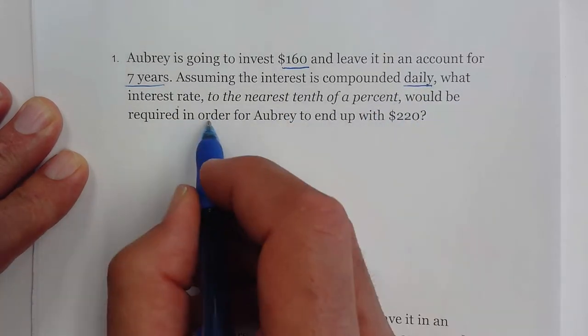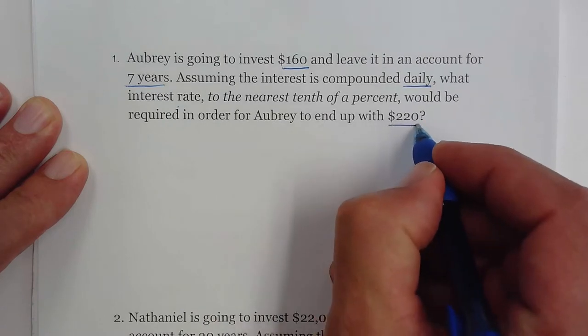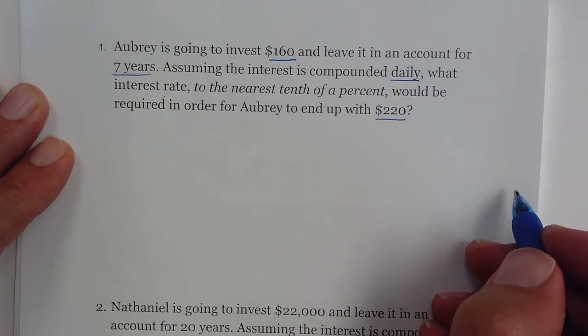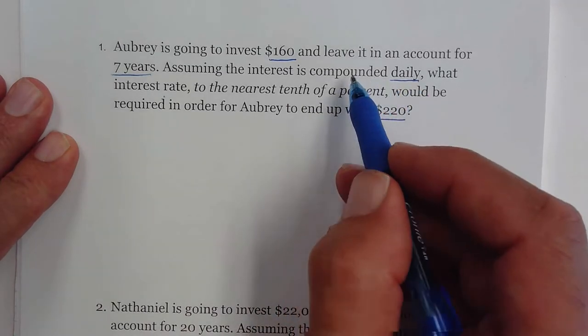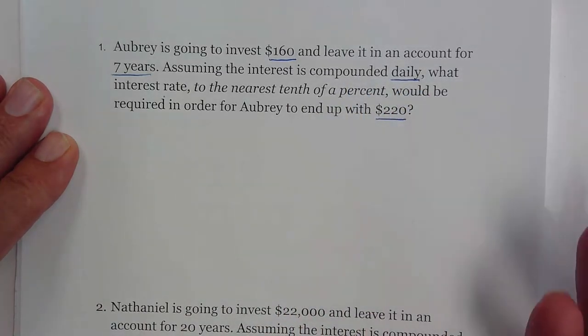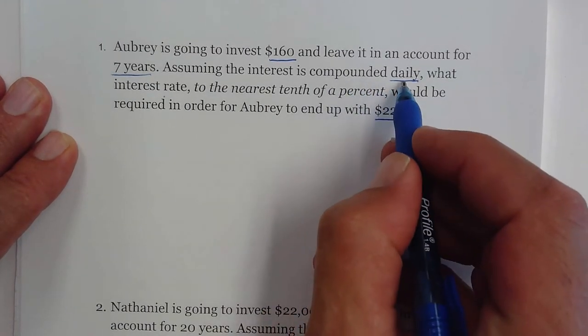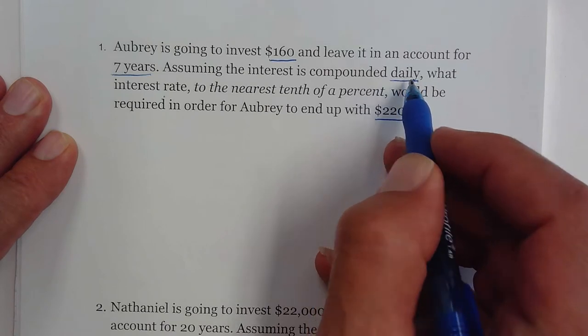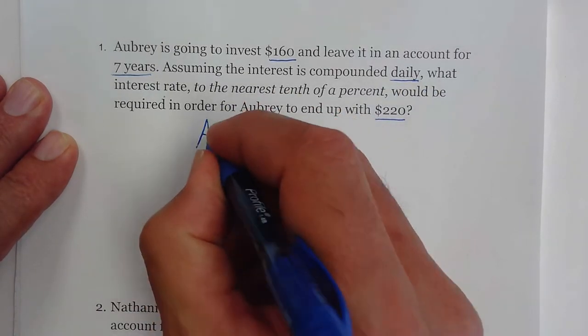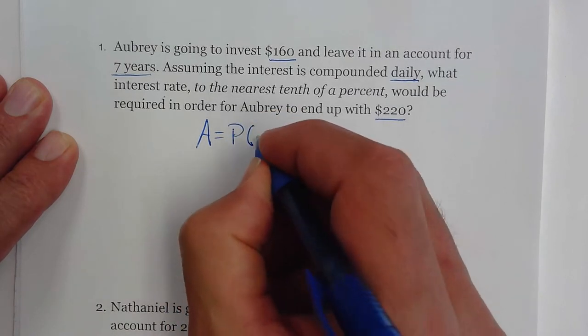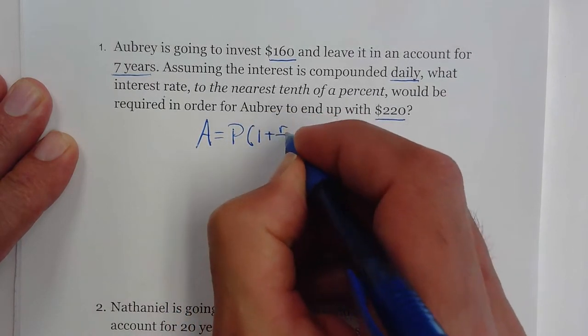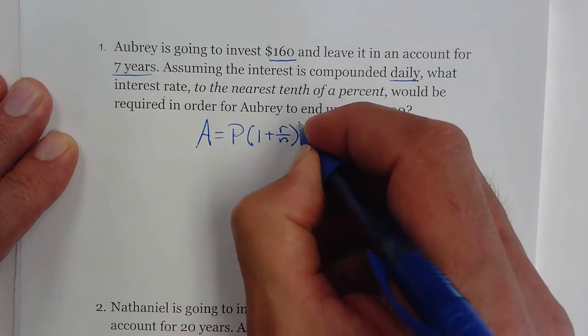All right, so first off, you've got to figure out is this a compound interest formula in the regular form or is it continuous compounding? It's the regular one because we did not see the word continuous there. So we know we're going to have our final amount equals our principal times (1 + r/n)^(nt).